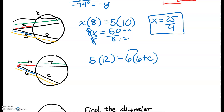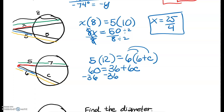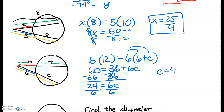We're going to have to distribute here to solve. 5 times 12 is 60, and then 6 times 6 is 36 plus 6C. So I'm going to go ahead and subtract 36 from both sides, and I get 24 equals 6C. Then I'm going to divide both sides by 6 and I get C equals 4.